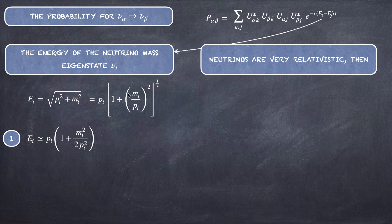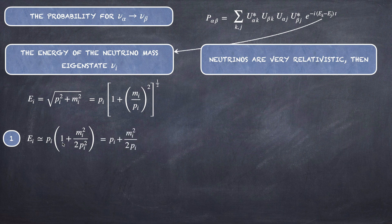Proceeding with the expansion, since m_i²/p_i² is very small, we write √(1 + m_i²/p_i²) ≈ 1 + m_i²/(2p_i²), neglecting higher-order terms. Therefore E_i ≈ p_i + m_i²/(2p_i).